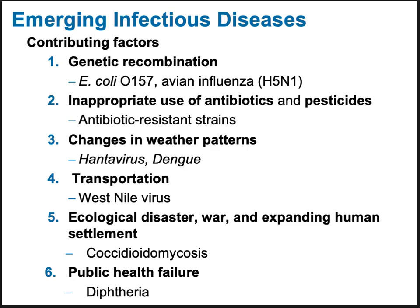Sometimes public health failures occur — allowing too many people to go unvaccinated leads to outbreaks of diphtheria and measles, which could be prevented with vaccines. Deforestation is also a factor, as are crowded open-air markets — sometimes called wet markets — where animals are freshly slaughtered on-site rather than chilled and preserved elsewhere. This has led to all sorts of outbreaks over the years.